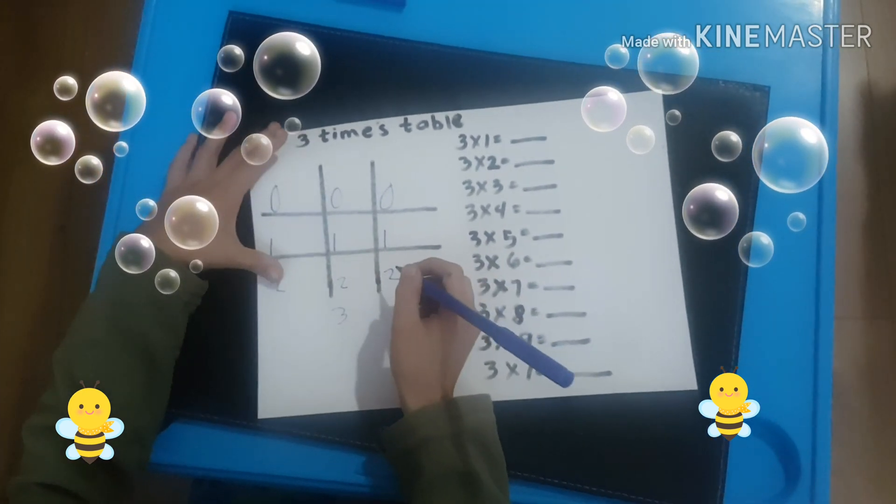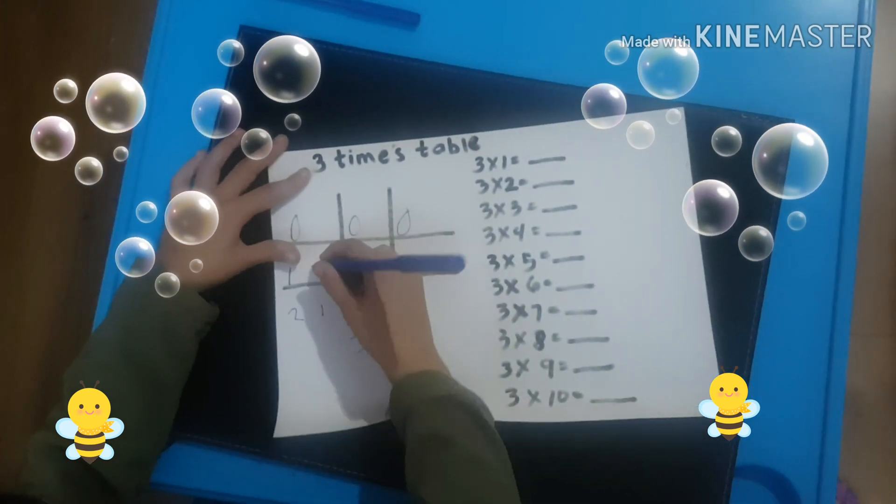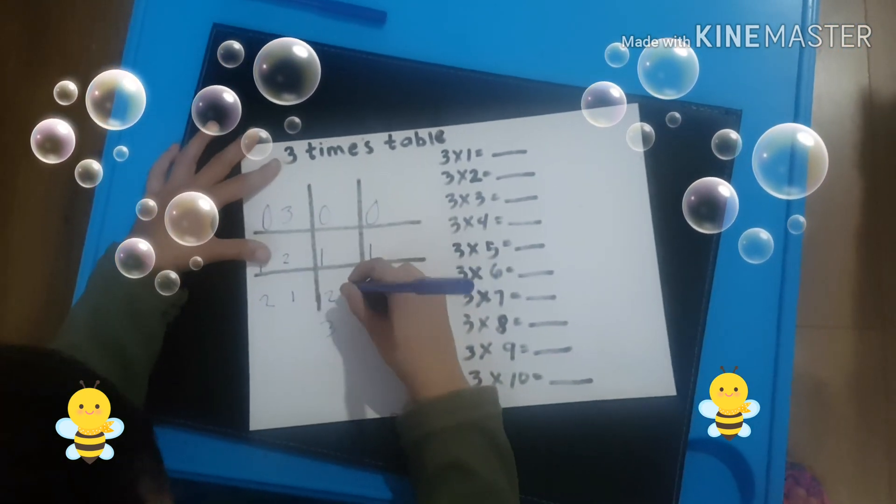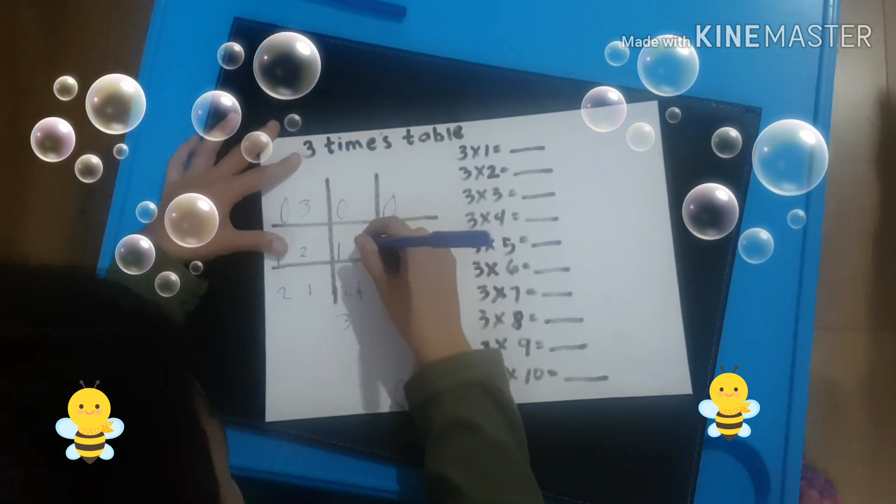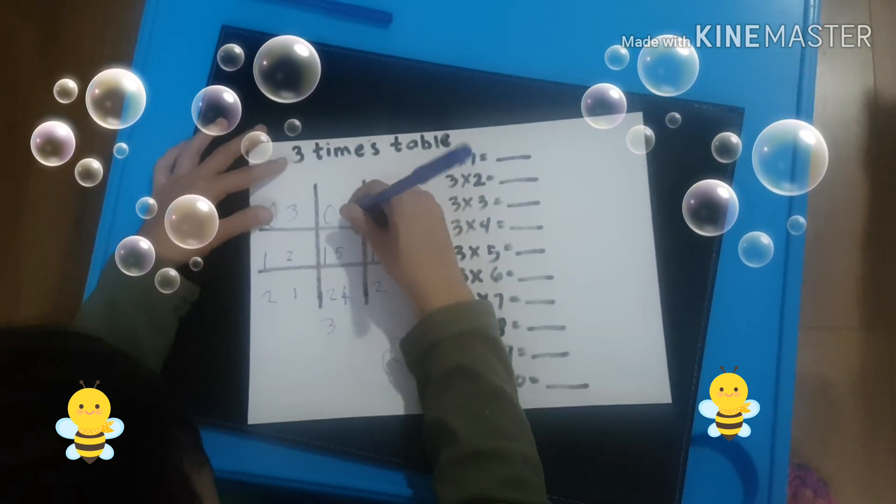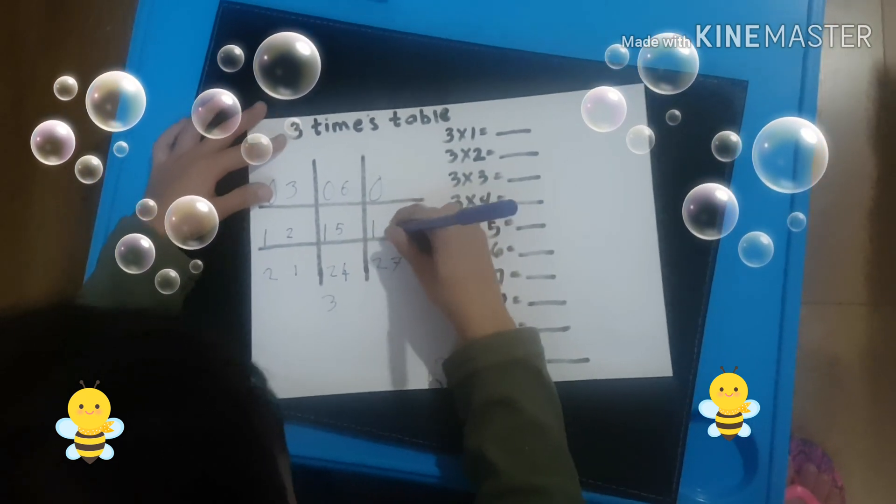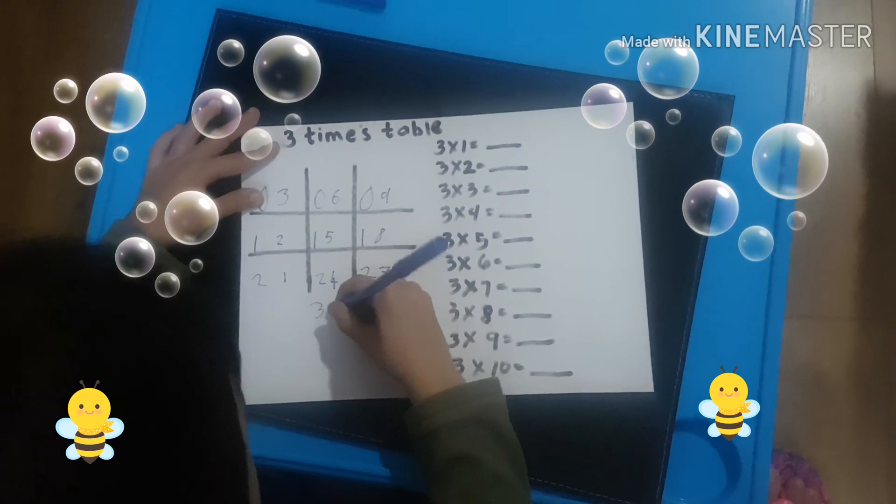And then what's next? You write 1, 2, 3, 4, 5, 6, 7, 8, 9, 10.